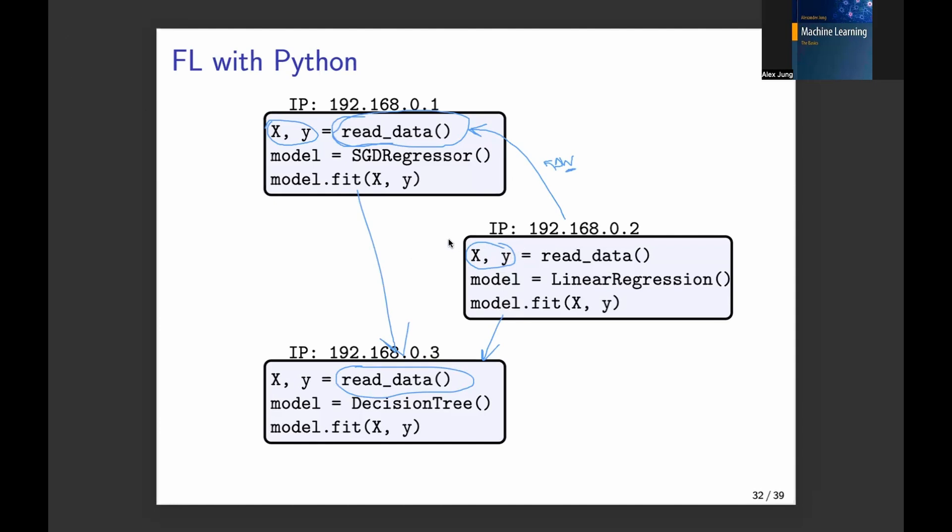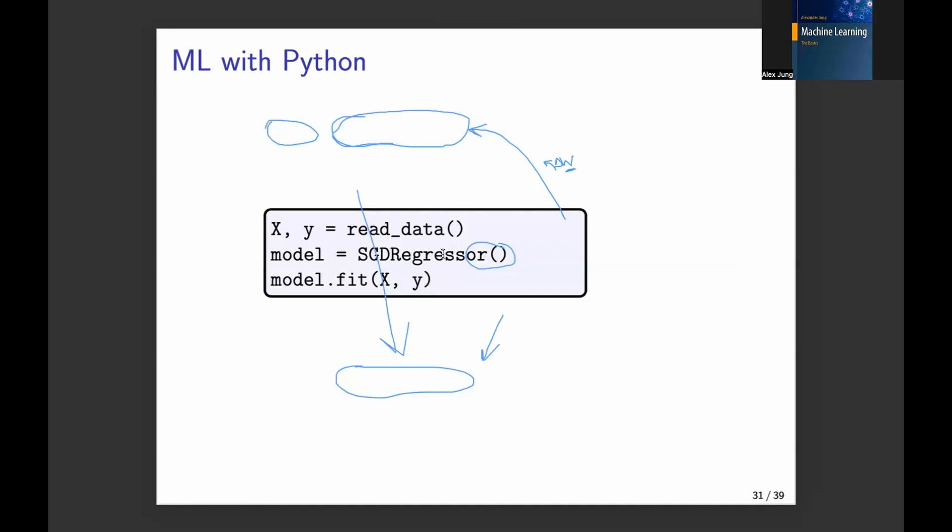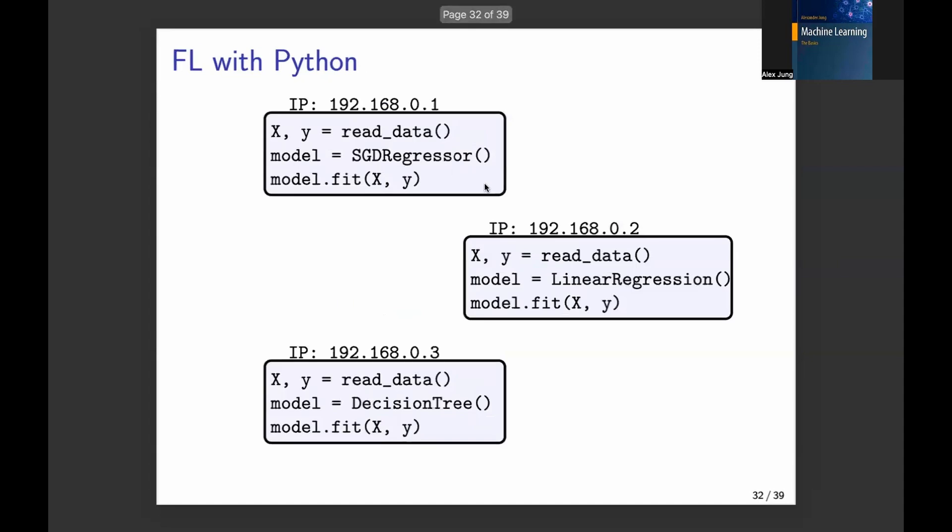So you see, it's really a natural evolution of machine learning. Machine learning with Python is you have one dataset, one dataset and one model. You train the model on this dataset. In federated learning, you have several models. So each one, and yeah, by the way here, we have here different models. So we will also see federated learning systems that can use different models for different devices.